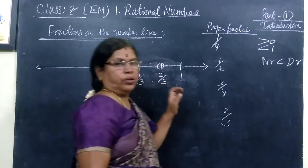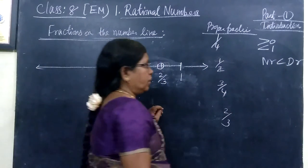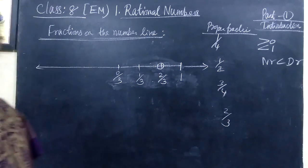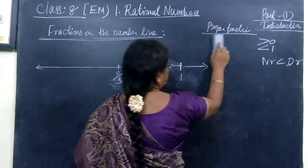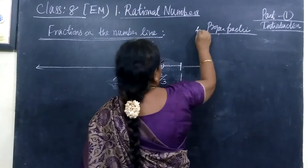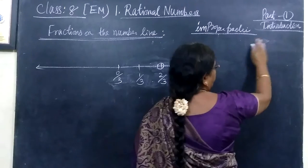Suppose if you want to mark the improper fraction. All these are proper fractions so we have marked easily. Suppose if you consider improper fraction. How can you mark it on the number line? For the number line.